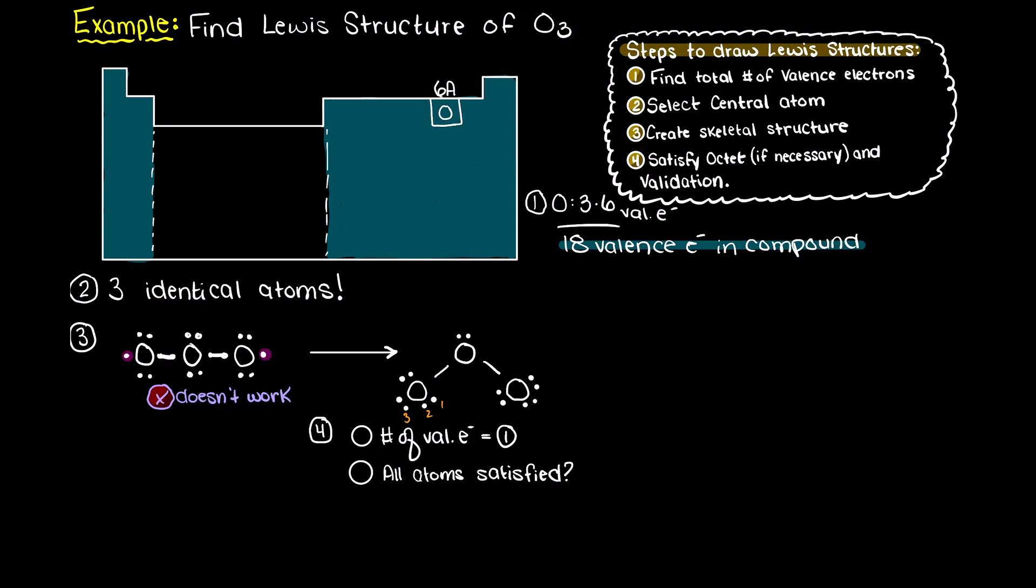So, counting our valence electrons, we have 8 valence electrons in our left and right oxygen, but only 6 in our central oxygen. Therefore, its octet is not filled. And, as you can see here, we have already used our available 18 valence electrons.